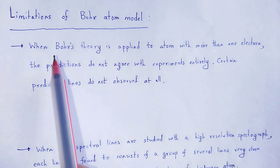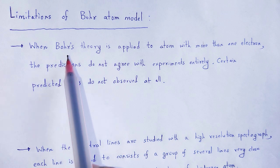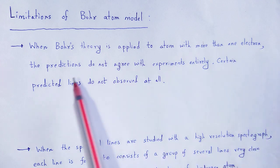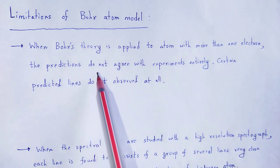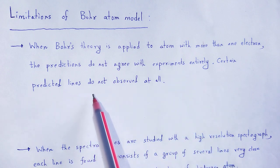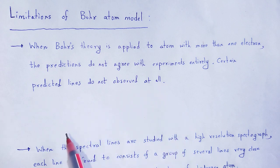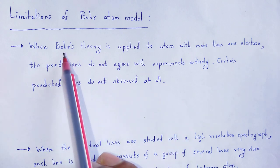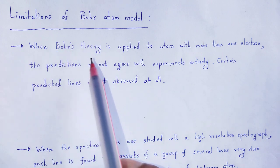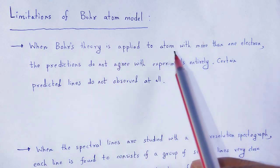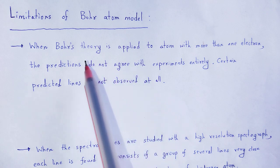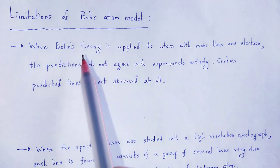When we apply Bohr's theory to an atom with more than one electron, the predictions do not agree with experiments. Basically, the postulates given by Bohr regarding the atom model are valid only for atoms containing a single electron, and he considered the hydrogen atom.